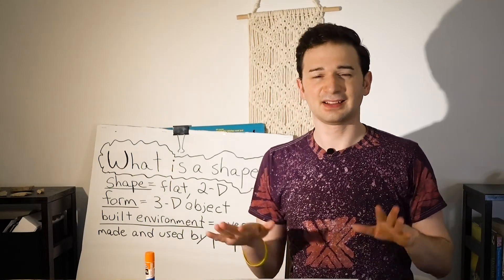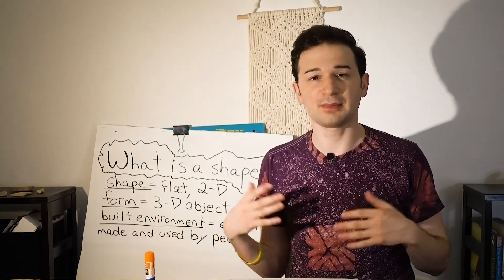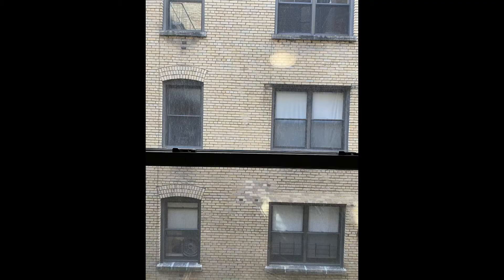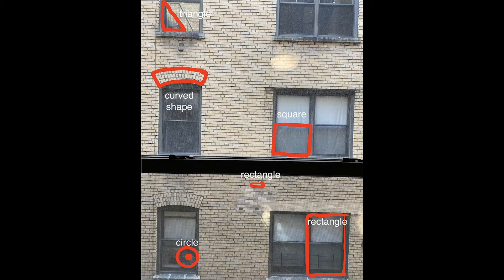For our next activity, let's look closer at the built environment. You can look at your own community or neighborhood to see examples of different shapes in structures made by people. This is what I see when I look out one of the windows in my house — part of a building. What kind of shapes do you notice? Are they geometric shapes made of straight, even lines, or organic shapes that are curved? Here are some I noticed: rectangles, some curved shapes, and a circle.